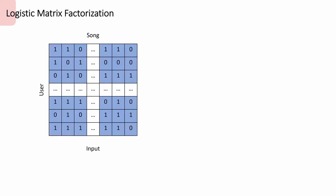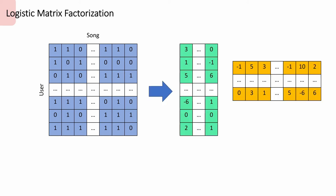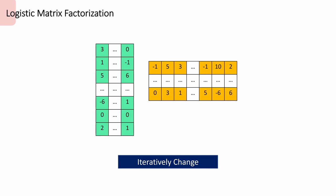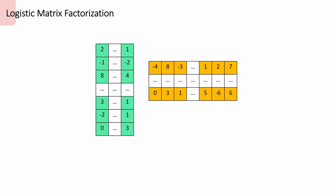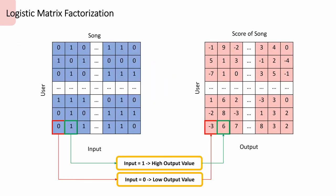So, what is logistic matrix factorization? Let's say that we have a matrix here where each row represents a user and each column represents a song. Each element in the matrix has a binary value of either 1 or 0, which tells us if a user likes a particular song or not. Matrix factorization helps us to factorize the original matrix into two smaller matrices. We then iteratively make small adjustments to the two smaller matrices until the product of them is such that when we compare it to the original binary matrix input, we will get a high-valued output whenever the original matrix element is 1 and a low output value when the element is 0.